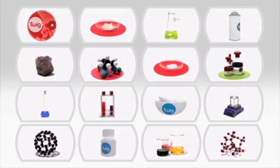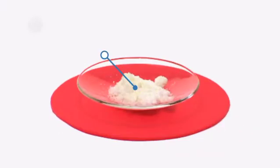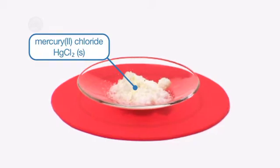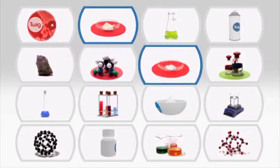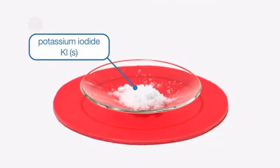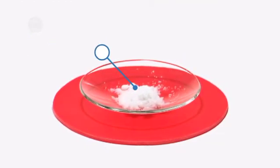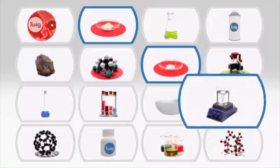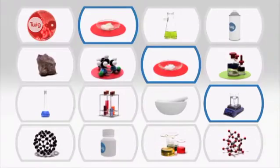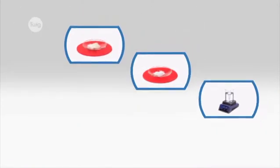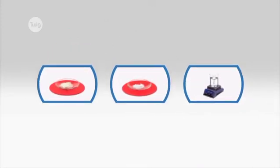To demonstrate this we need mercury chloride to make a saturated solution, potassium iodide to make another saturated solution, and a magnetic bar and stirrer. Now let's see how mercury chloride and potassium iodide solutions react to form an insoluble precipitate.